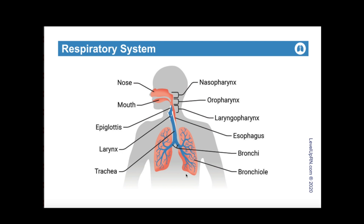I also want to mention that we have pleura that surround and cushion each of the lungs. The space between the two layers of the pleura is called the pleural cavity. When we get into disorders of the respiratory system, there will be some disorders that cause a buildup of air, blood, or fluid in that pleural cavity, which compresses the lungs and really makes the lungs at risk for collapse.